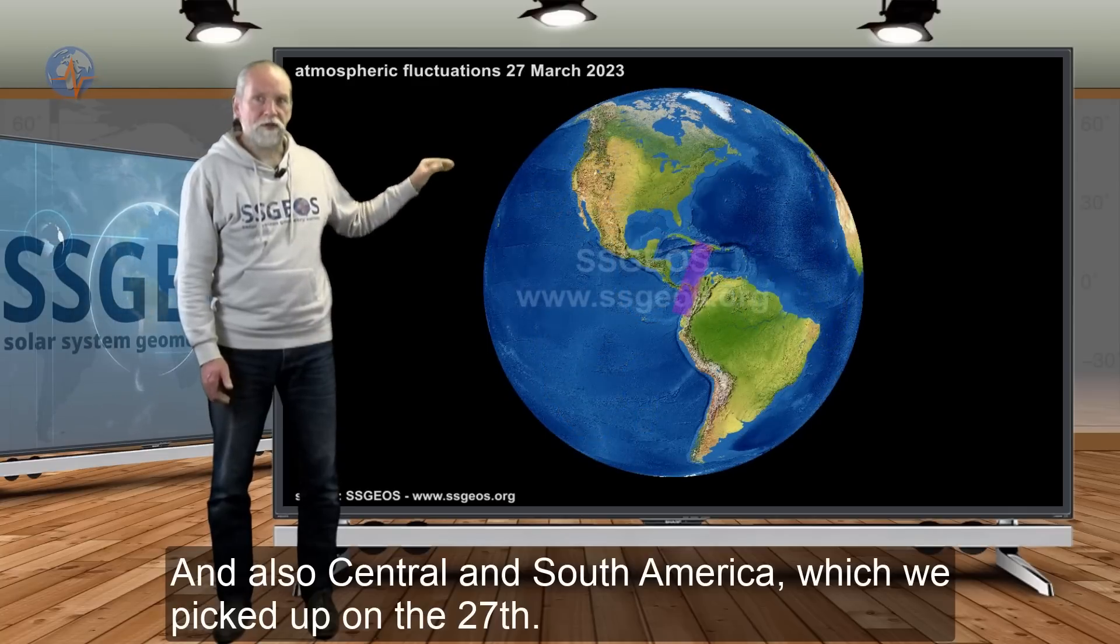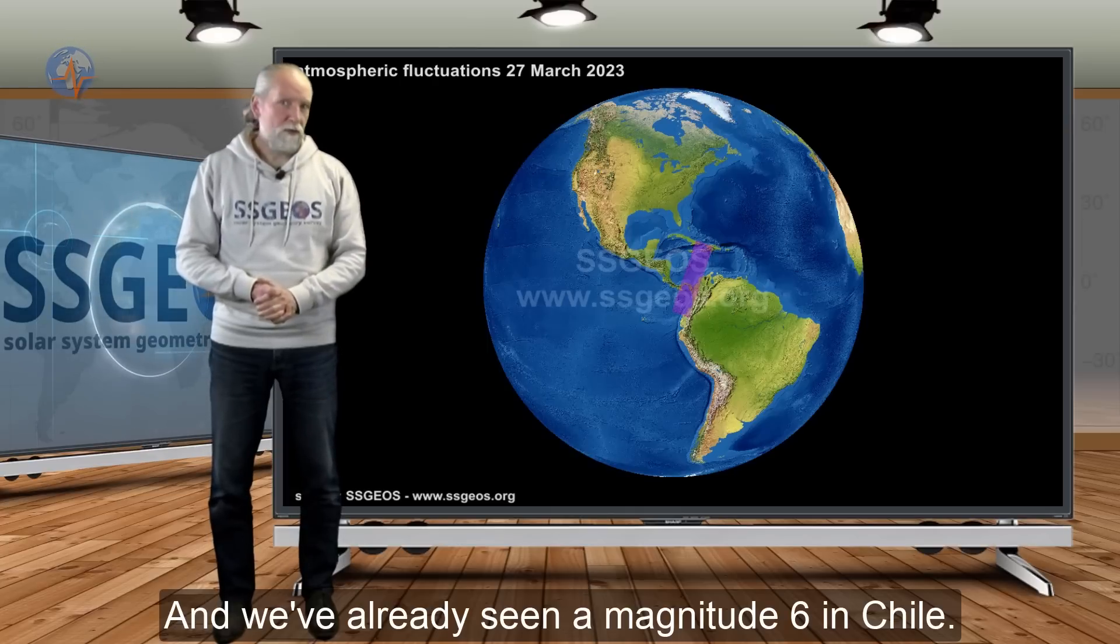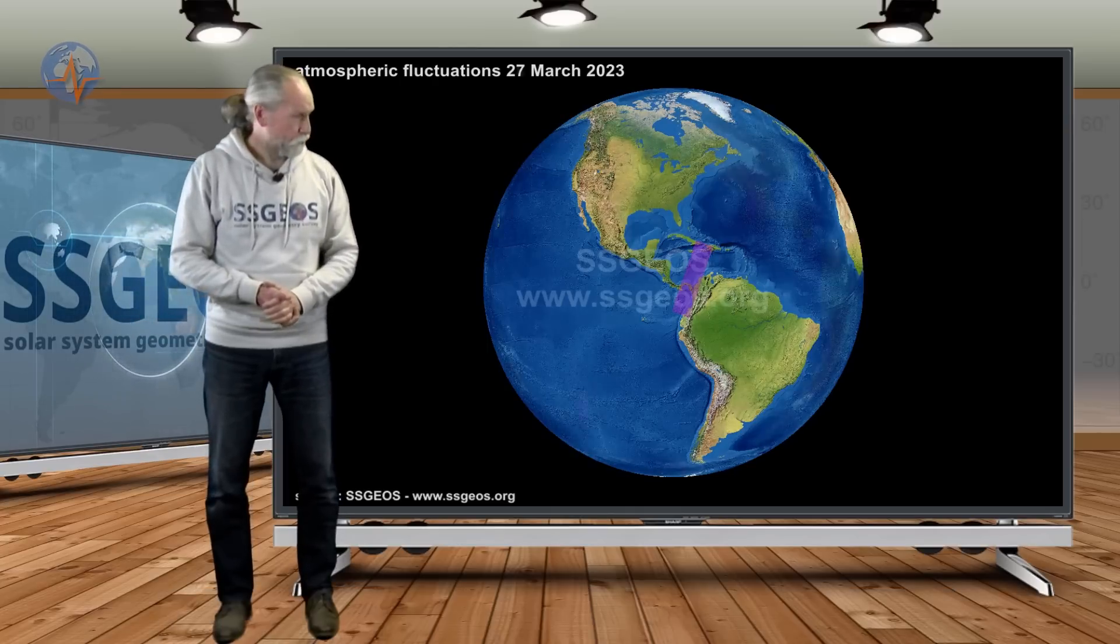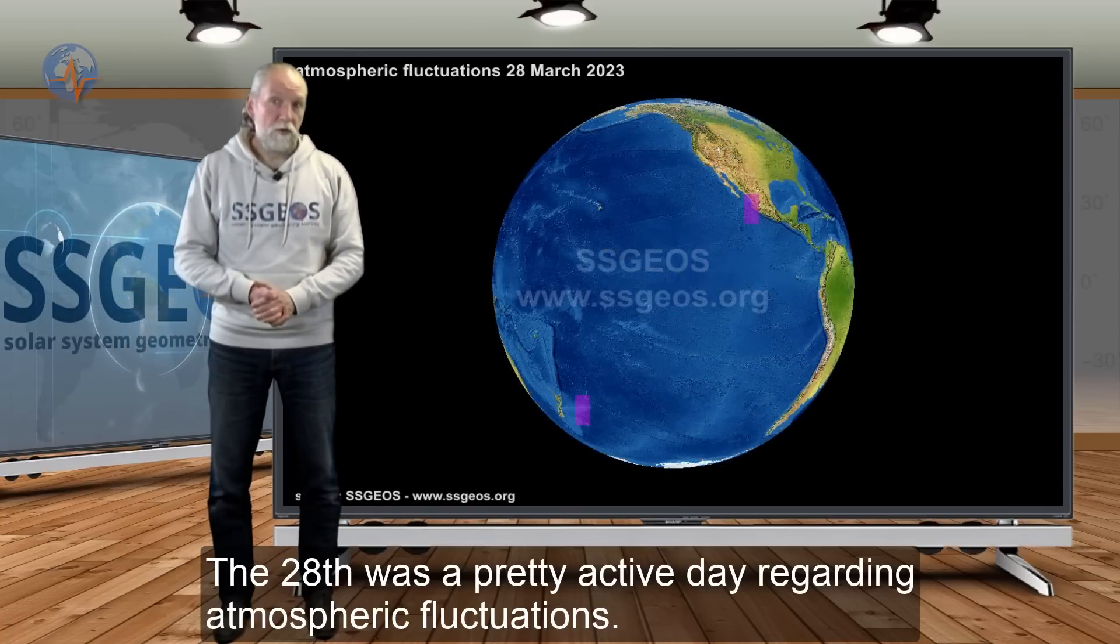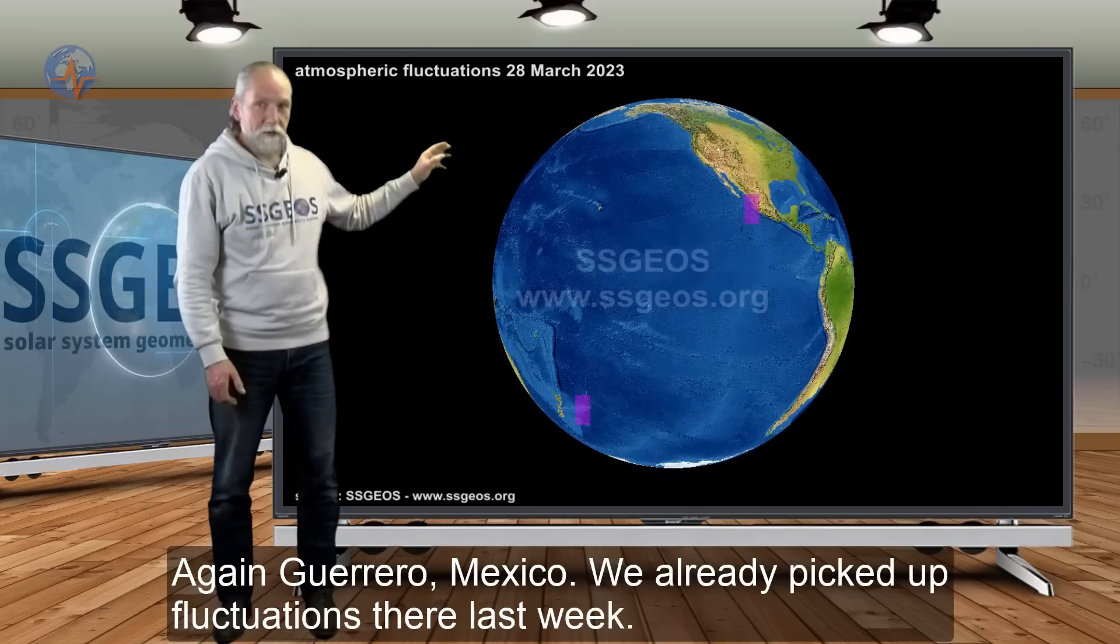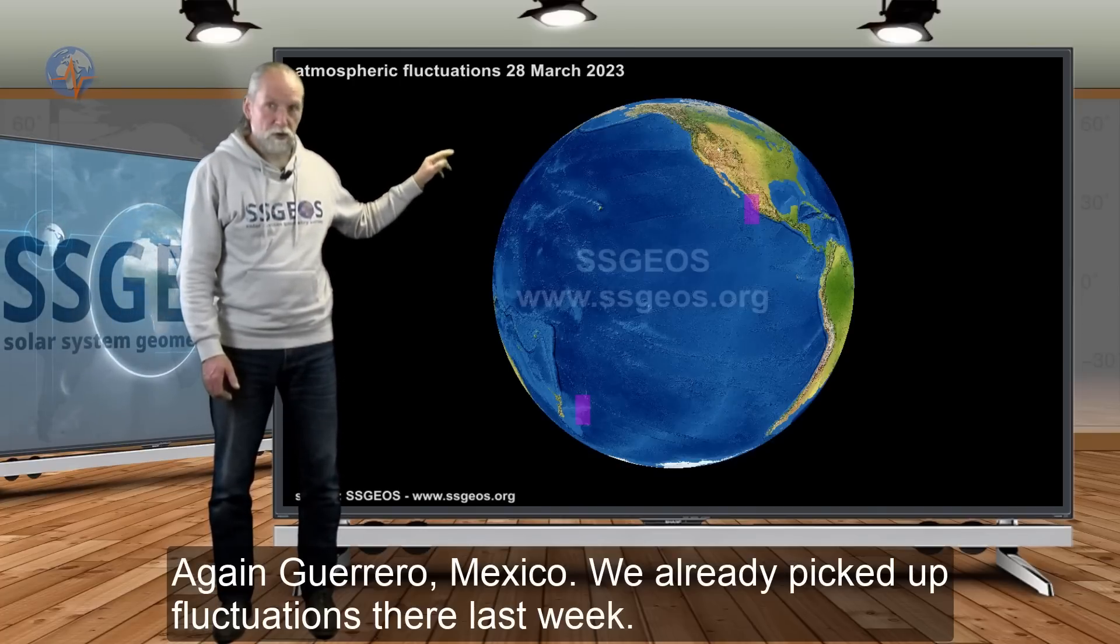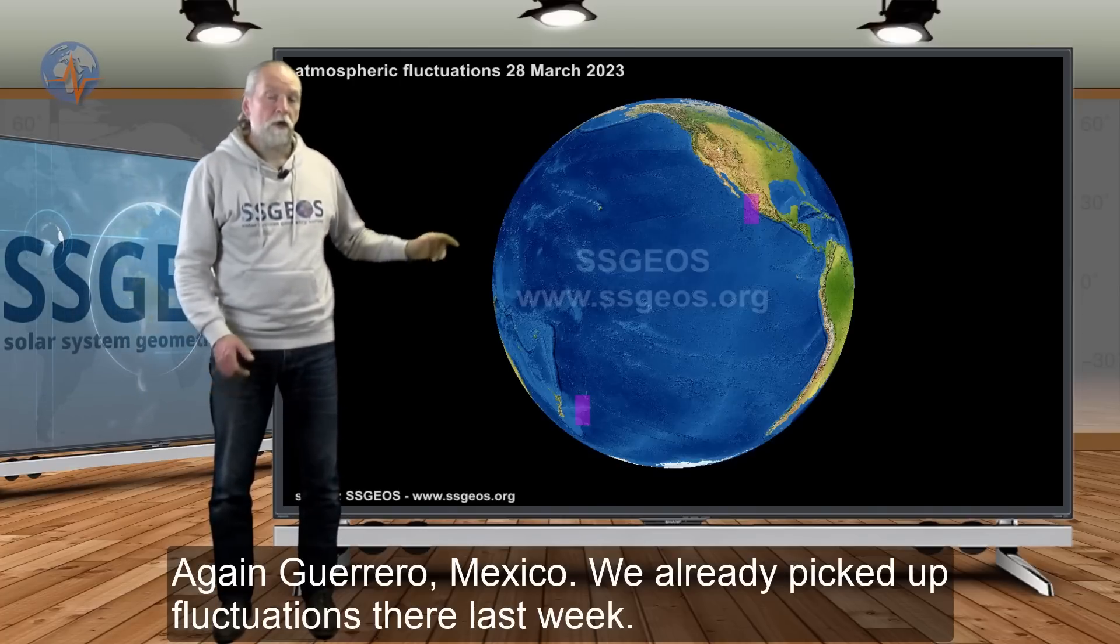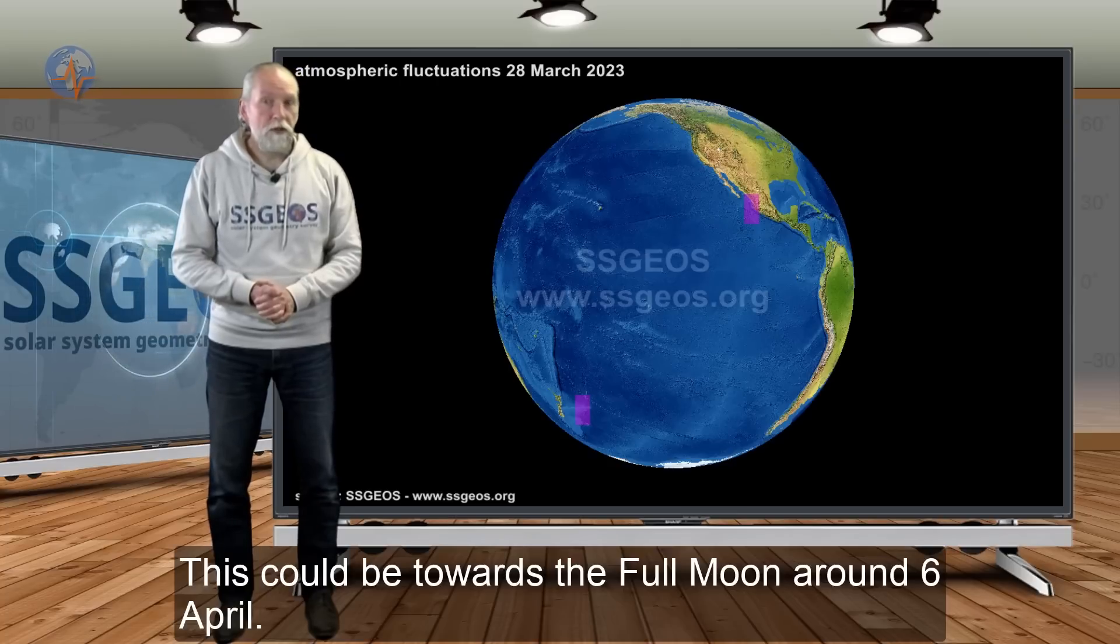And then also Central South America that we picked up on the 27th, and we've already seen a magnitude 6.3 in Chile. On the 28th, that was a pretty active day regarding atmospheric fluctuations. Again, Guerrero Mexico, that region, and we picked up some fluctuations there in the last week or so. There may be upcoming larger seismic activity there in the short term, and this could be towards the full moon around April 6th.